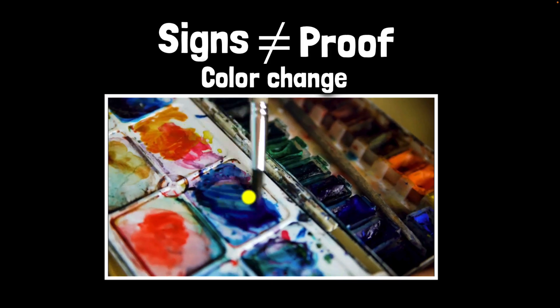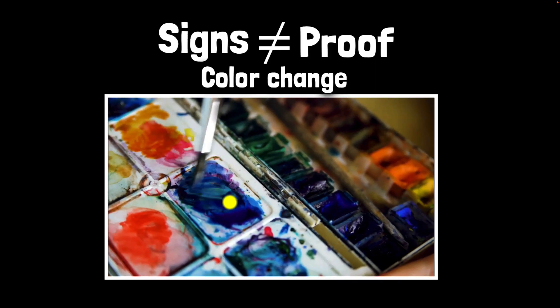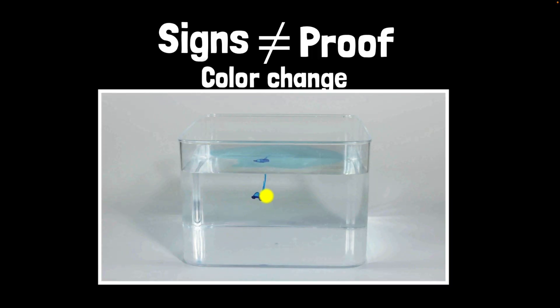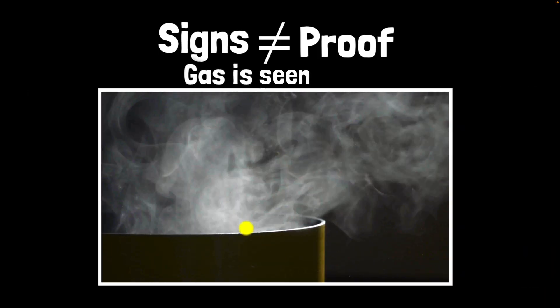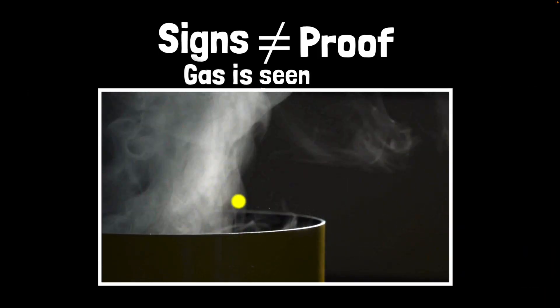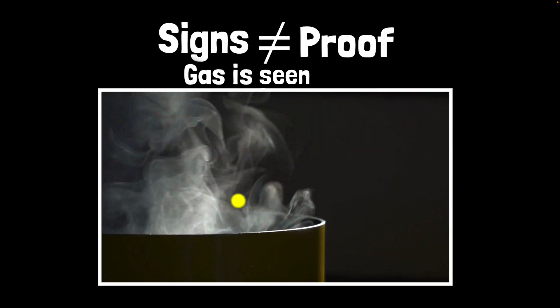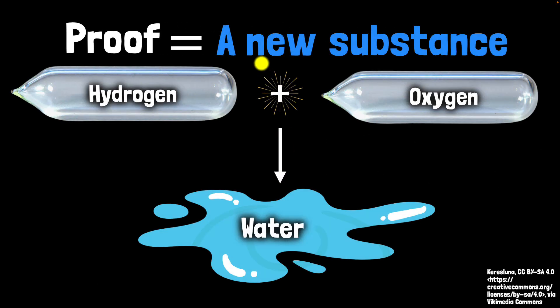Remember, just because you see the signs of chemical changes doesn't necessarily guarantee that a chemical change has happened. For example, when mixing paint colors there's a color change, but that's not a new substance — it's just a physical mixture. Similarly, putting ink in water produces a color change but no new substance. And when boiling water we see a gas, but it is still water — it's a phase change, a physical change. The only way to be sure a chemical change has happened is to test for a new substance altogether, like testing that water has been produced when hydrogen reacts with oxygen.